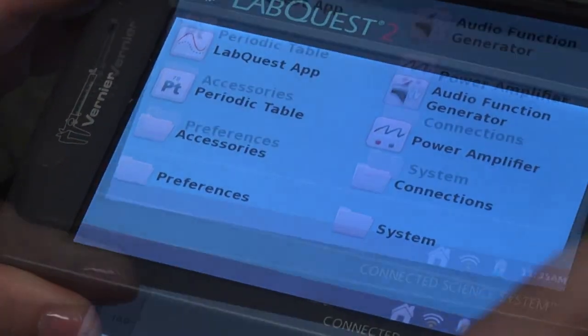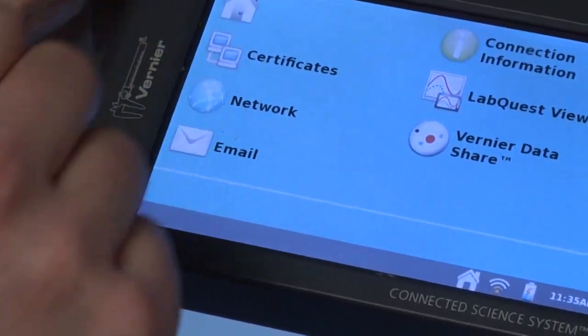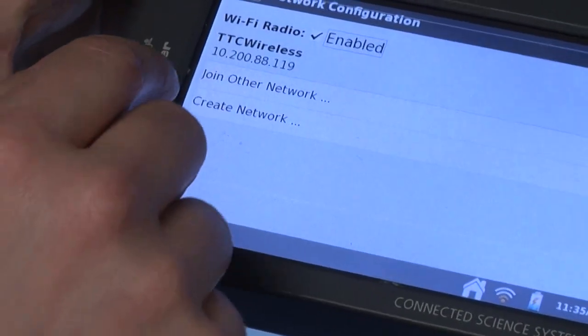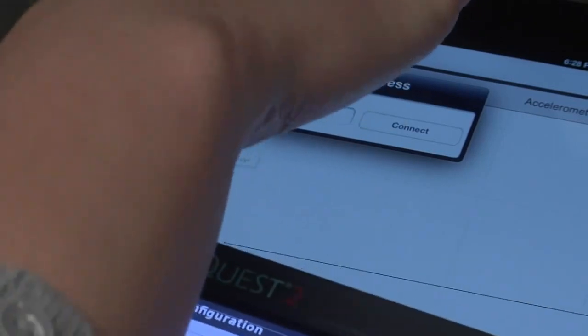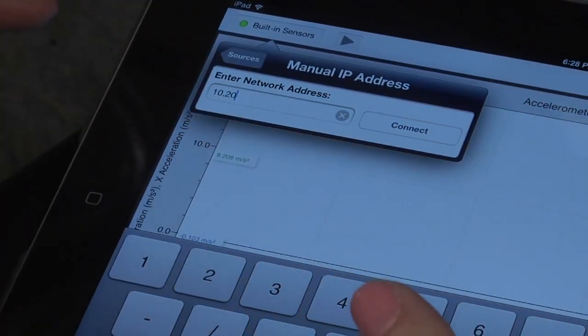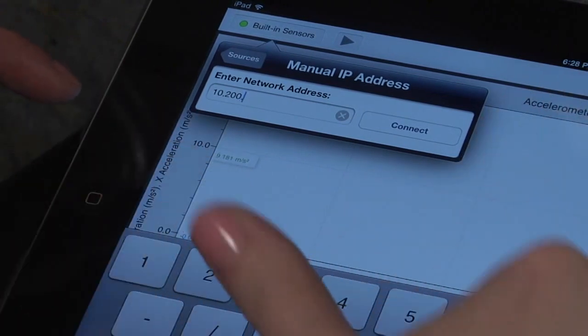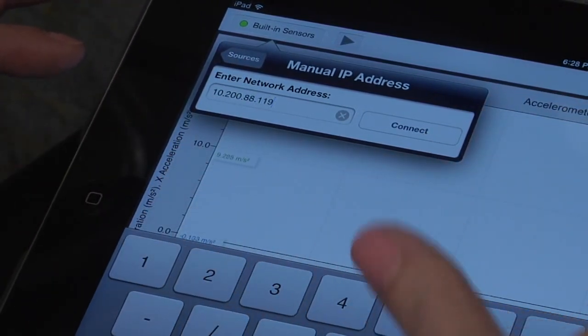Click the home button, press connection, and then network. Whatever the IP address is here, you want to type that into the iPad. So it's 10.200.88.119.